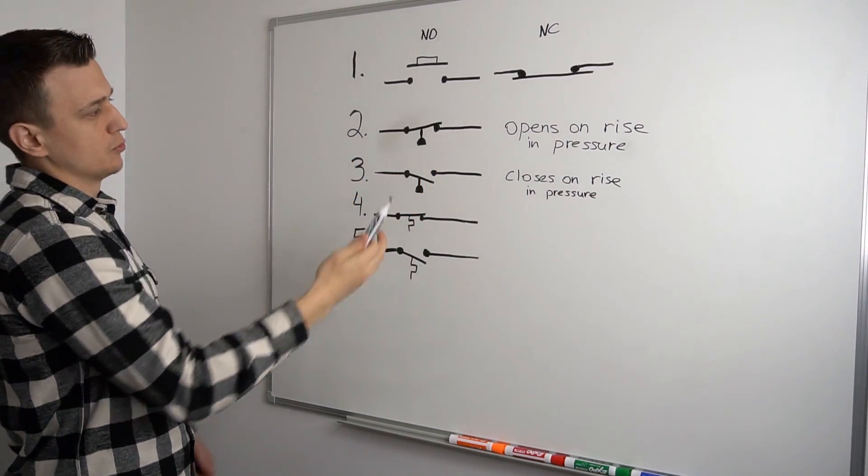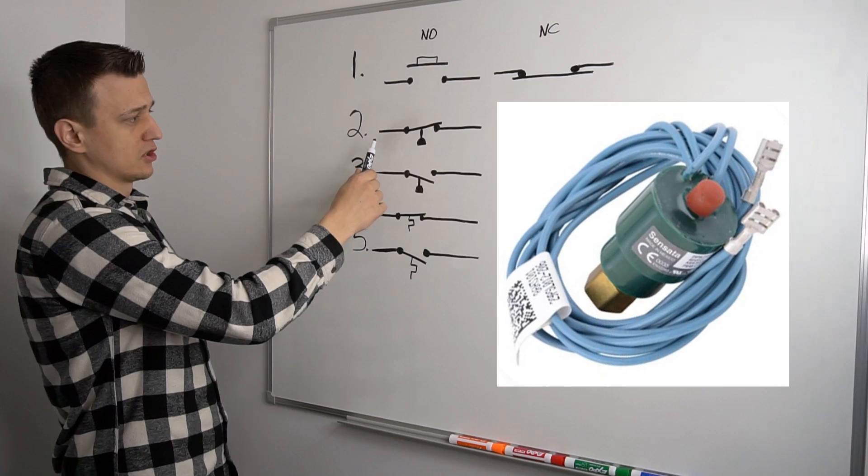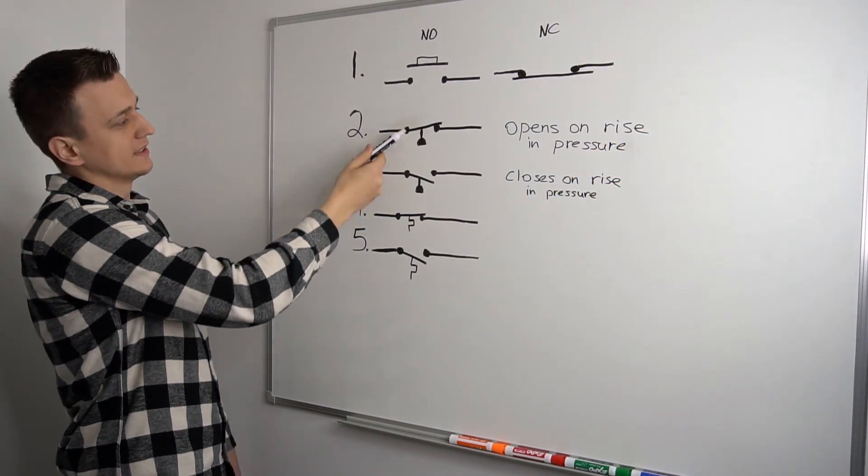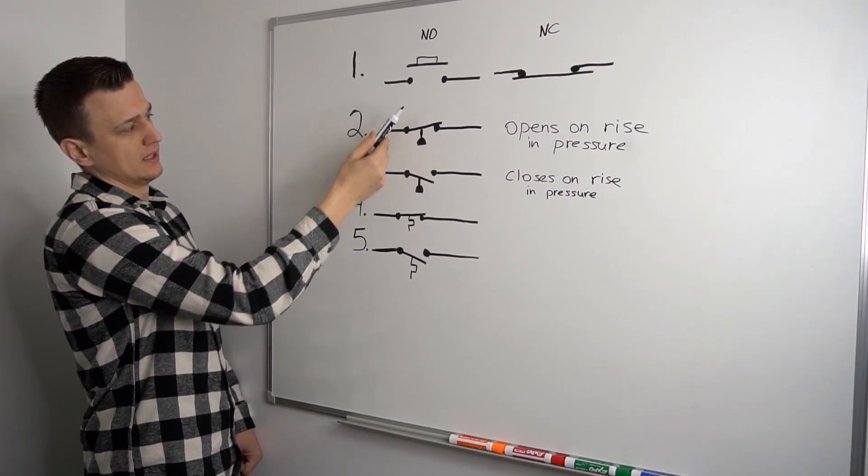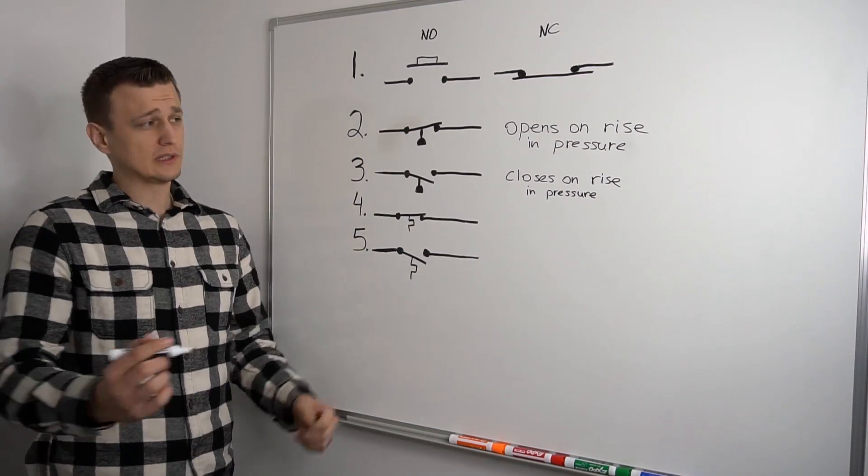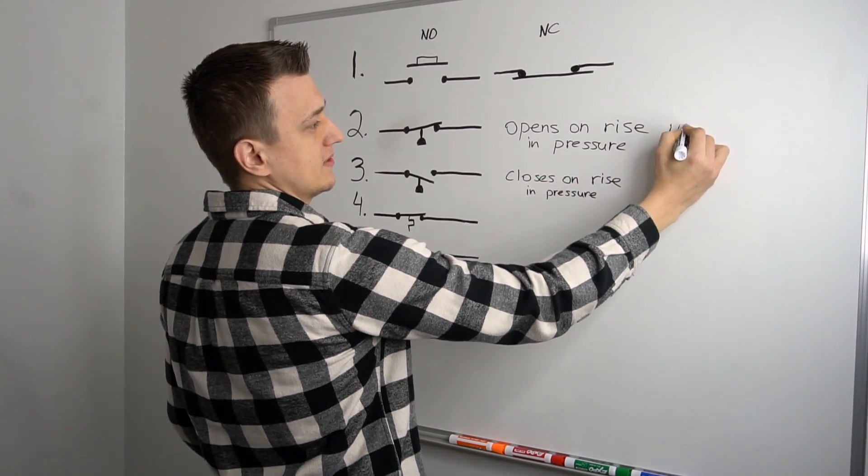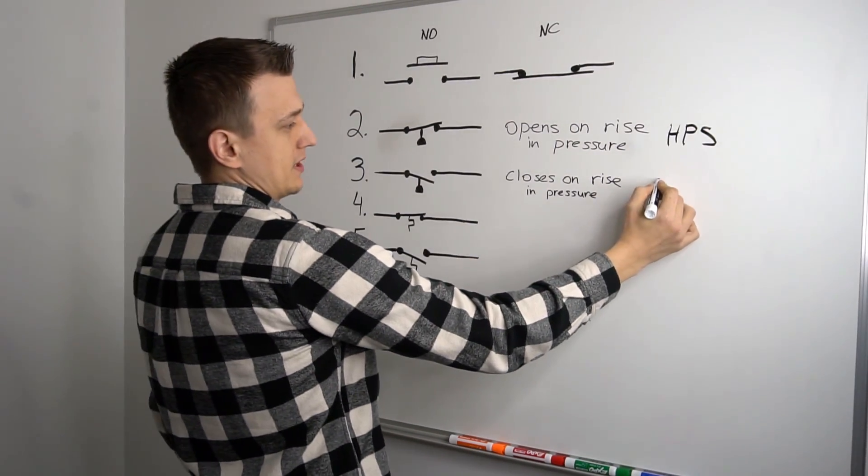This one, for example, would be a high pressure switch. So like an air conditioner. So if the air conditioner pressures, the refrigerant pressures get too high, this pressure switch would sense the increase in pressure and open up and interrupt power turning off the unit. So let's go ahead and write that down as well.